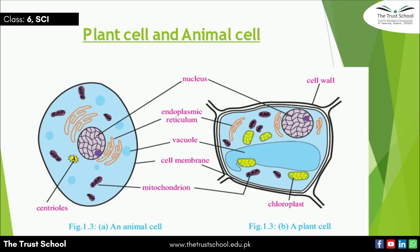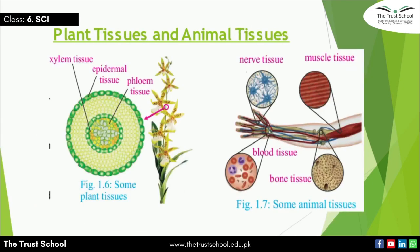In animal cells, the cell wall is absent, but in plant cells, the cell wall is present. In animal cells, the nucleus is present at the center, but in plant cells, the nucleus is present at the side because of the presence of the large vacuole.